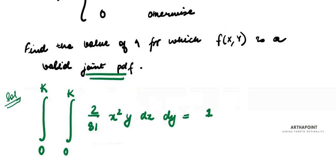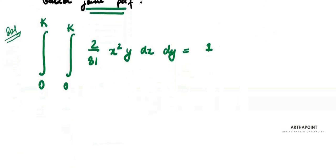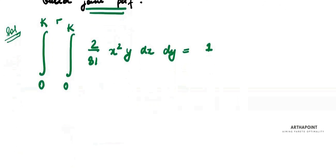So, when I integrate over all values of x and then over all values of y, that should give me 1. First of all, I will integrate it over all values of x.